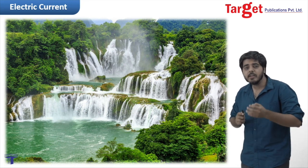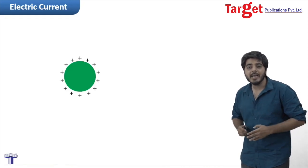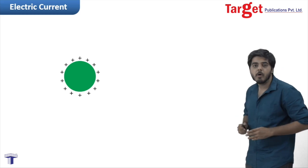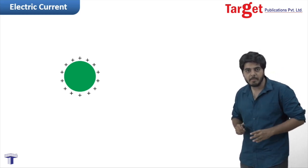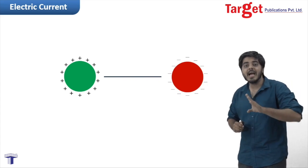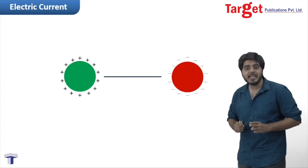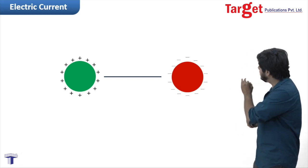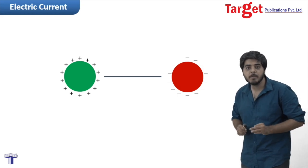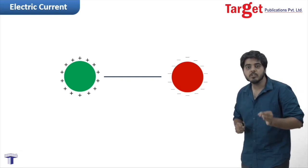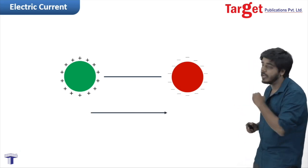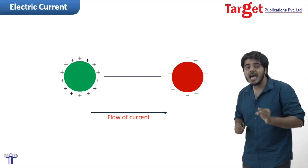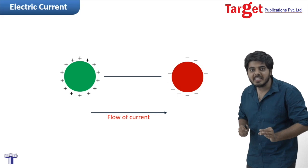To understand electric current, I have taken a sphere filled with positive charge — the green color sphere — and another sphere having negative charge — the red color sphere. We all know that current always flows from positive to negative, so current is flowing from the green sphere to the red sphere.